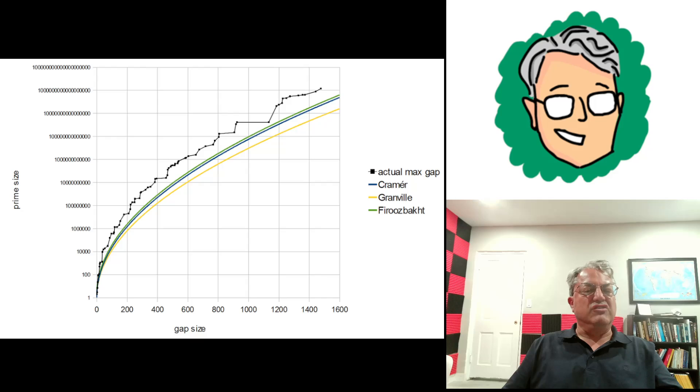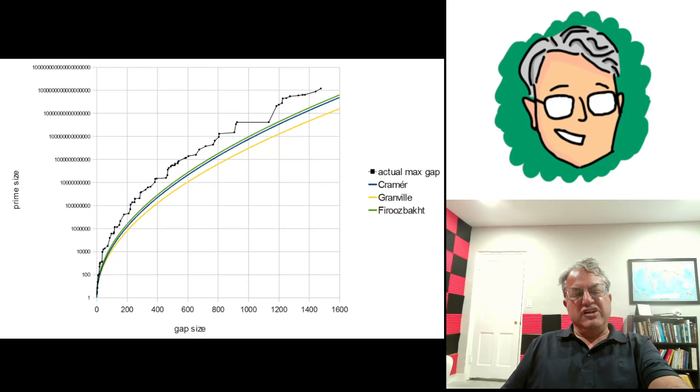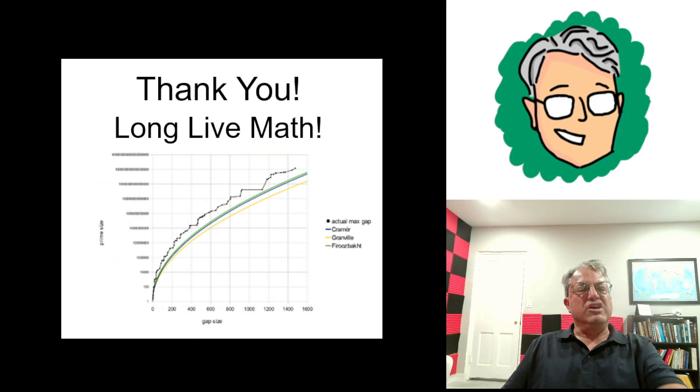Just because you have numerical evidence for something doesn't constitute a proof in math. You actually need a logical proof. There's a lot of things in math where things look like they're true, but they turn out to be not true. Anyway, so that concludes my video for today on maximal prime gaps.